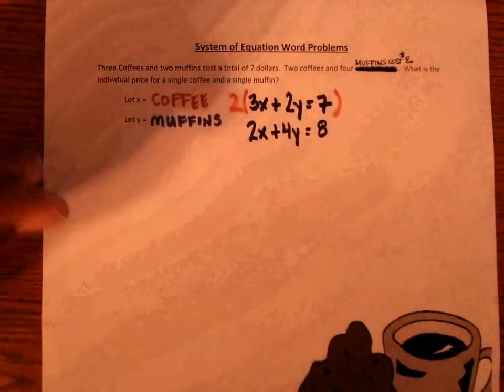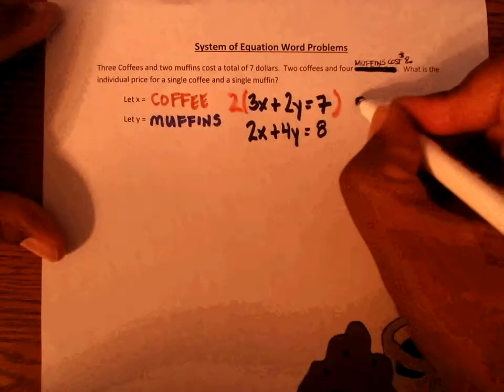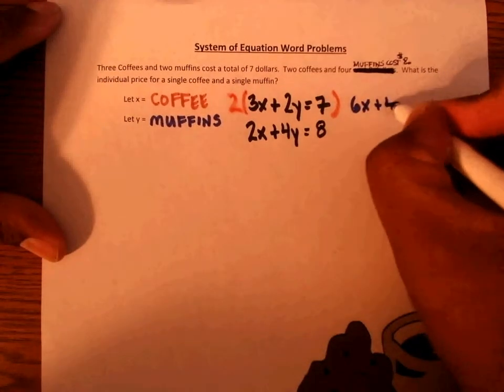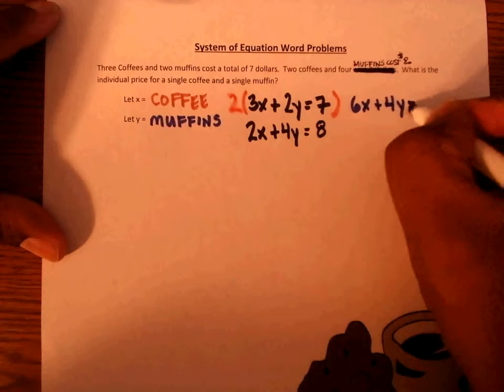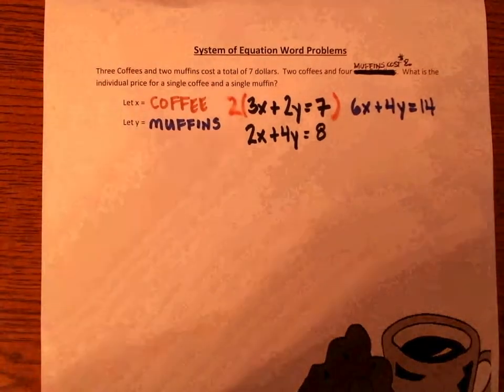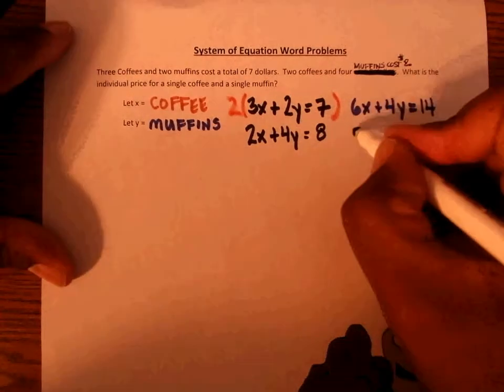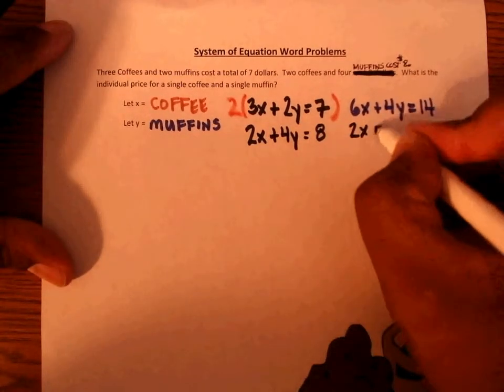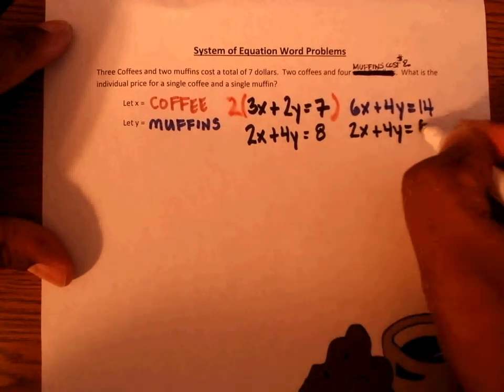Thus giving us the equation 6X plus 4Y equals 14, and we have our original equation 2X plus 4Y equals 8.